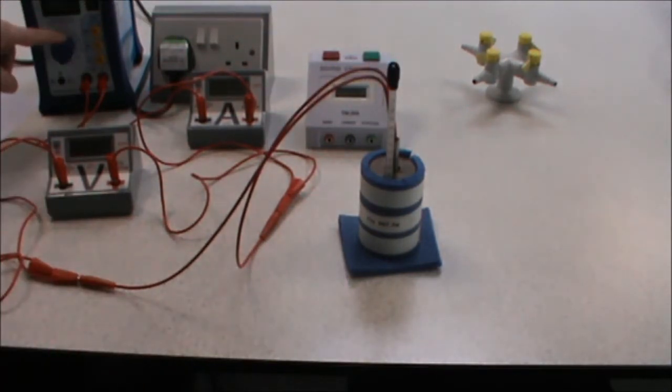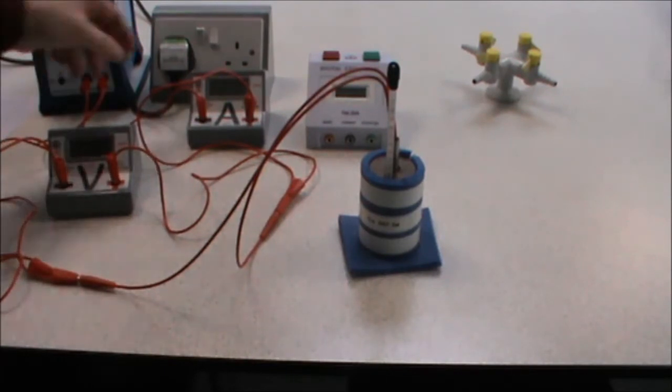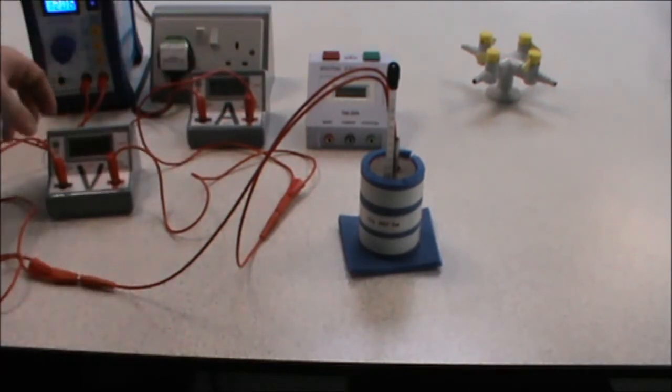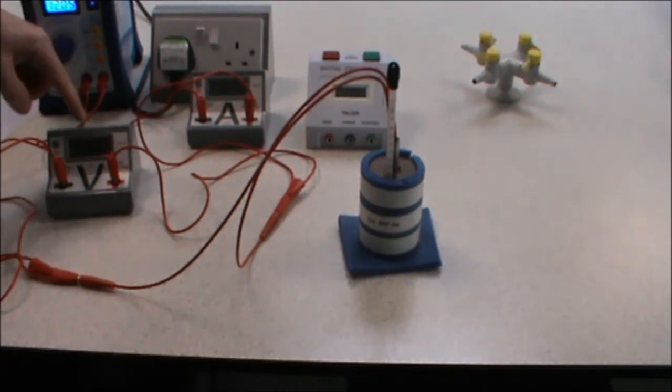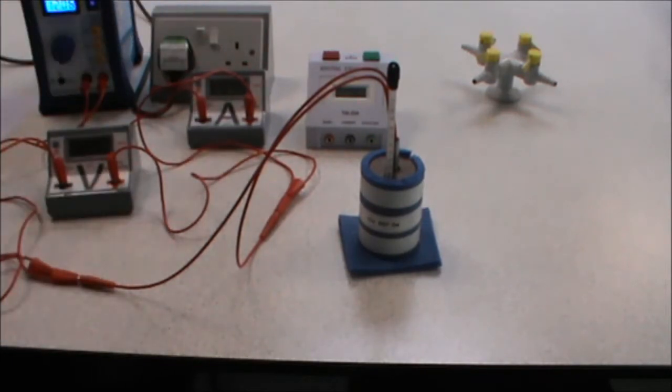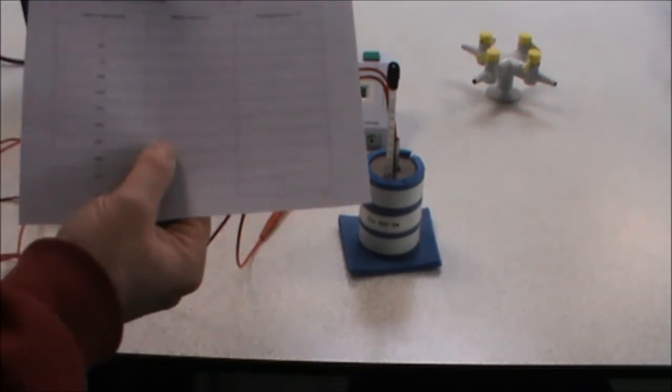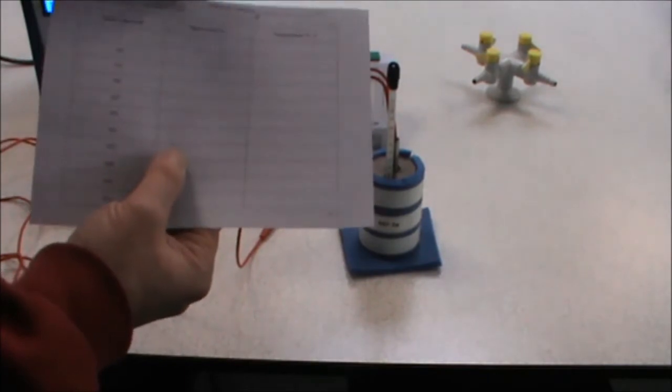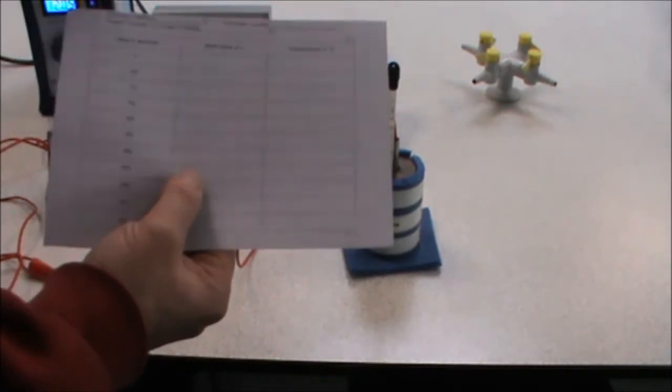We make sure that the power supply is set to 12 volts, we turn on the power supply, turn on our ammeter and voltmeter, and record the readings of the voltage and the current at the top of our results table. The ammeter reading goes here, voltmeter reading goes here.